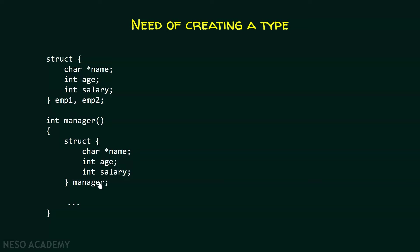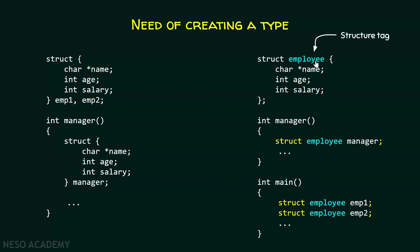Instead of writing structures once again, we can create a type of the structure. After writing the type, we can declare variables within the functions. This is called a structure tag. This whole struct employee is now a user-defined type, and with this user-defined type we can declare a variable within the function. Here we have just written 'struct employee manager' within this function — we don't have to write the whole structure once again. We just have to specify the type of the structure and then the name of the variable. Within the main function also, we are simply declaring emp1 and emp2 of type struct employee. With the help of this structure tag, we are basically creating a type of the structure.